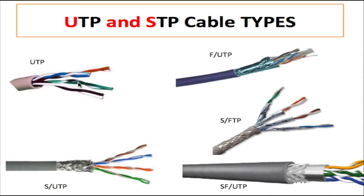The induction of voltage into the adjacent pair — which is crosstalk — is going to be much higher than the cable is rated for. The rating is dependent on how many turns per inch the cable has. The higher the frequency, the more turns per inch you need to cancel the electromagnetic field. That is how we get a higher rated cable — more turns per inch to cancel crosstalk at higher frequencies.